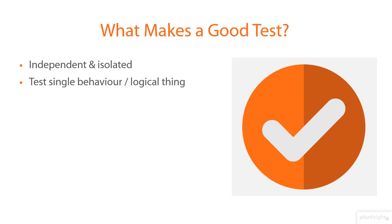Just as with production code, the intent of the test should be clear to the reader. For example, in a single test for our calculator, we wouldn't have both the multiplication and addition being asserted on. We shouldn't have large sprawling test methods that are hard to read and hard to understand what the actual thing is we're testing.